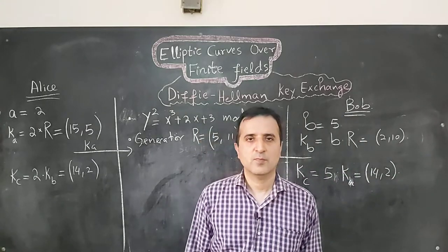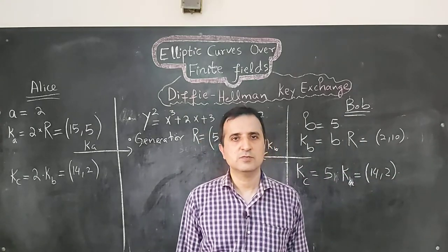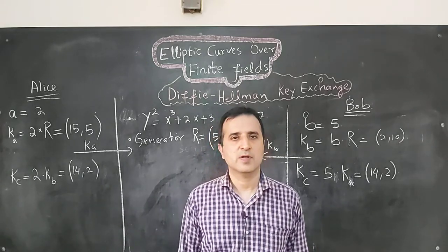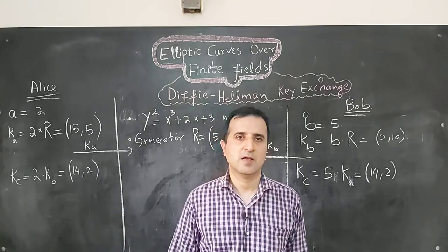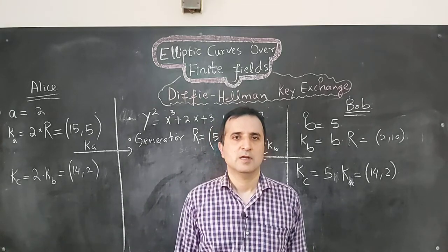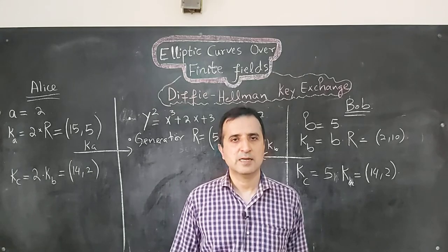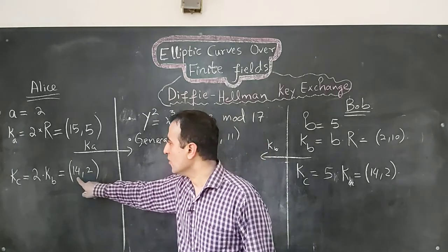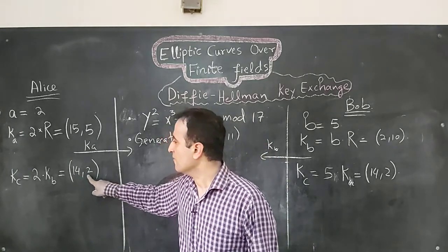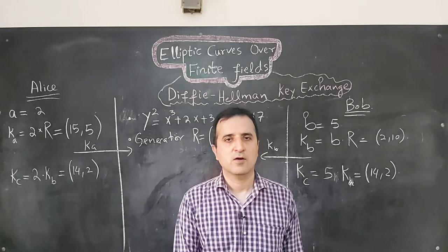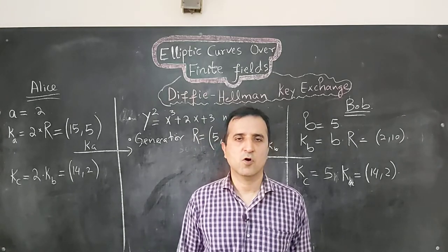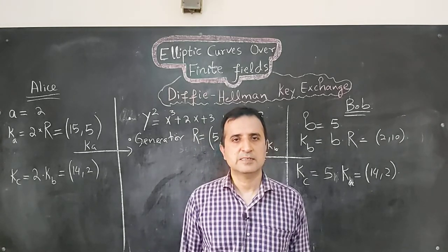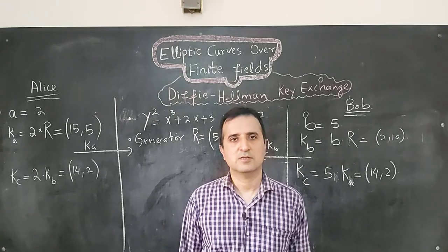Alice and Bob can use this common private key to run any symmetric algorithm. To this end, Alice and Bob can select either the x-coordinate or the y-coordinate of this common private key. That's it for today.